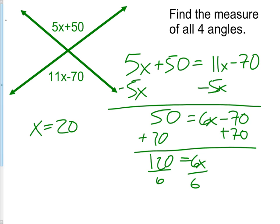Now this did not answer the question. The question asks us to find the measurement of all four angles. What we need to do now is substitute. We're going to take the 20 and put it in for x. 5 times 20 is 100, plus 50 would give us 150 degrees. On the lower angle, when you insert 20, you will see that it is also 150 degrees.